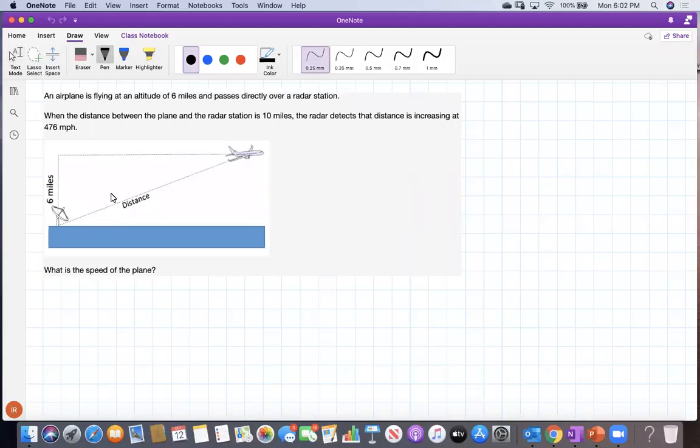An airplane is flying at an altitude of six miles and passes directly over a radar station. When the distance between the plane and the radar station is 10 miles, the radar detects the distance is increasing at 476 miles per hour. A diagram is shown. What is the speed of the plane?